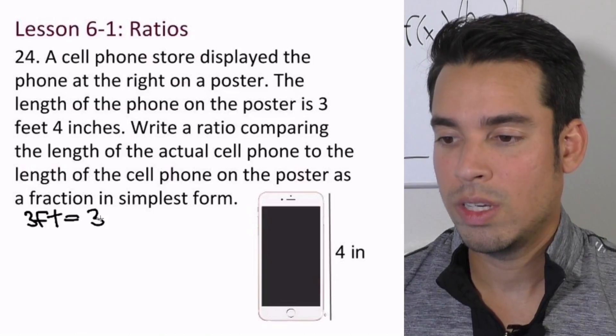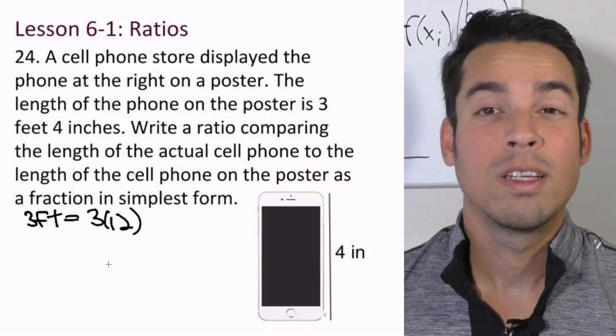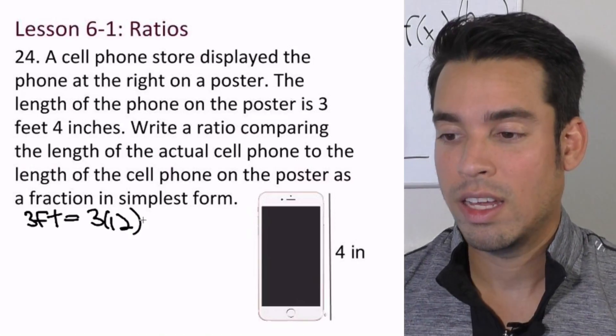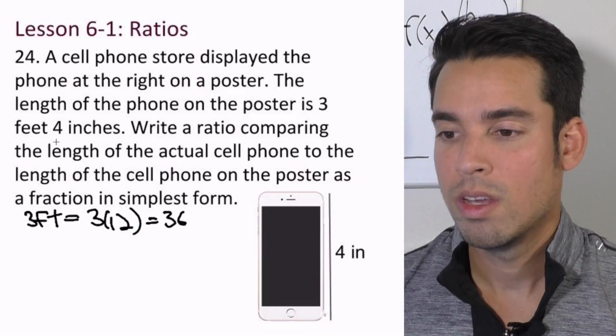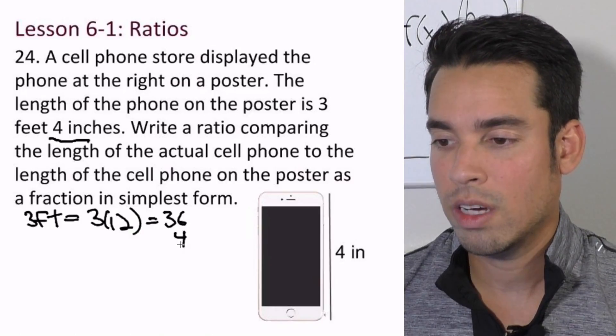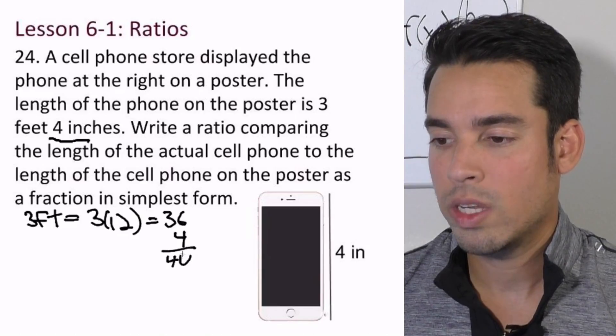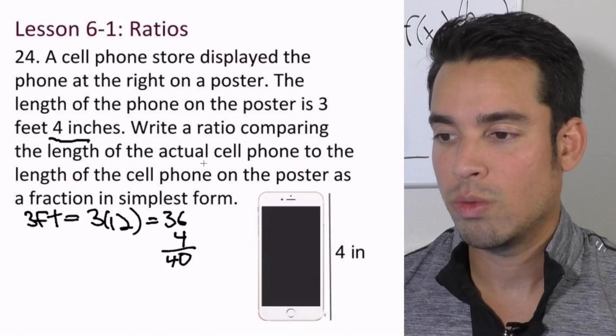Because there's 12 inches in one foot: 24 inches in two feet, and of course 36 inches in three feet, plus this 4 inches—this little 4 inches right there. Guess what? We got 40 inches. That's the size of the poster. Our ratio would be—does it want it as a fraction? As a fraction.